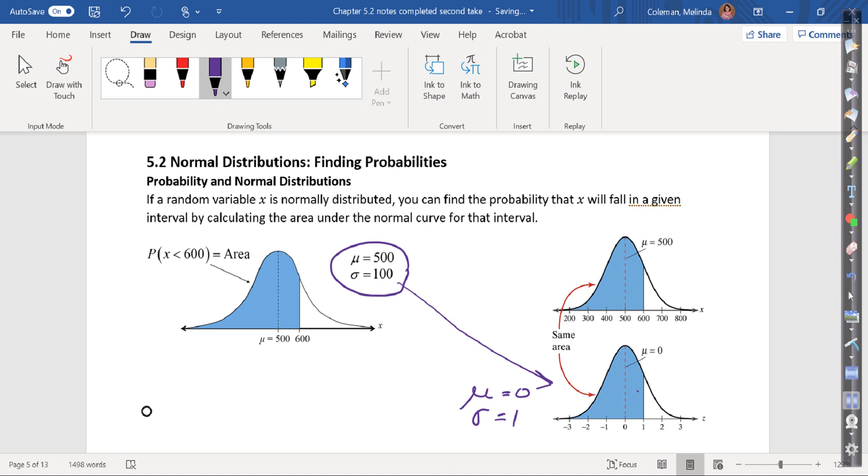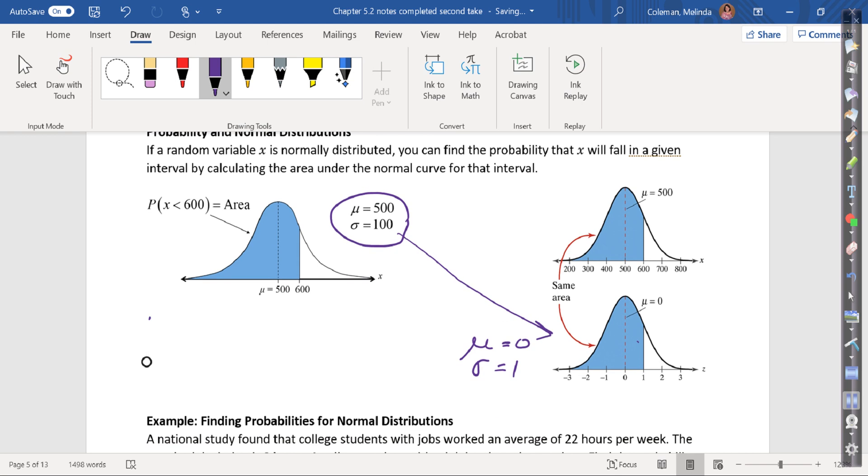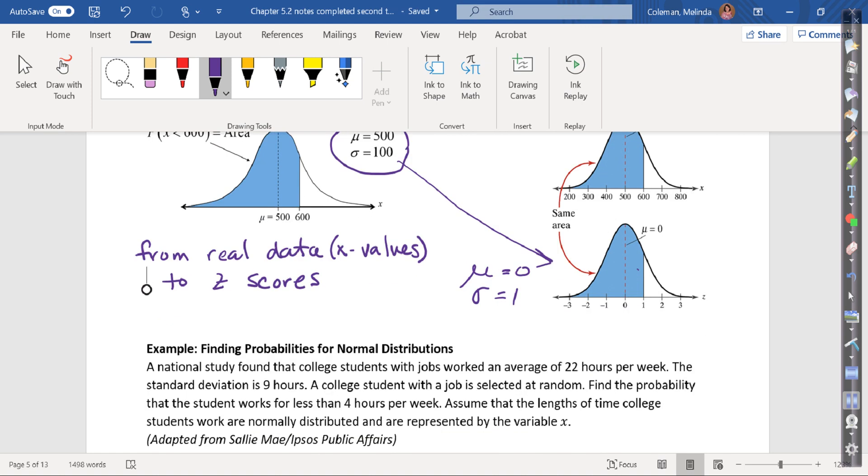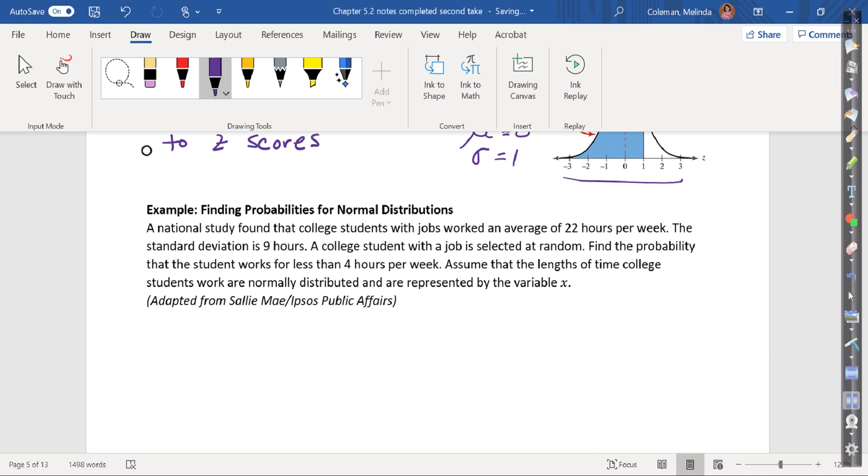Basically we're going to transform these two together, transpose them one on top of the other. We do that by changing these - we need to go from real data, which is your x values, to z-scores. So those z-scores then look like plus or minus three, actually 3.49 standard deviations. We're going to change them so the z-scores look like negative three to three.